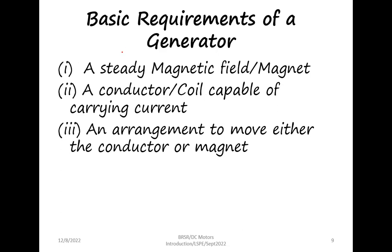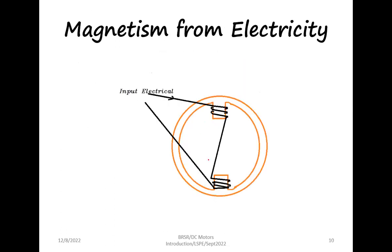For a generator, the basic requirements are: a steady magnetic field, a conductor or coil capable of carrying current, and an arrangement which can move either the conductor or the magnet. When we have a conducting material and pass current through it, that space becomes a magnet — electricity is producing magnetism. This is the principle used for creating electromagnets inside any machine. We call this the field coil, and its main purpose is to give the required flux inside the machine.